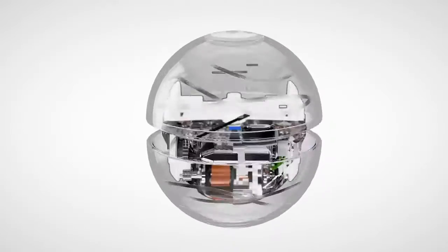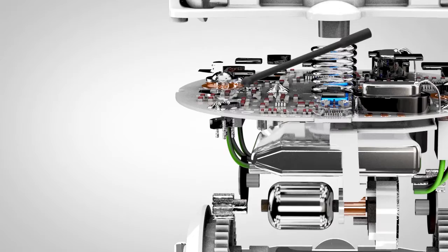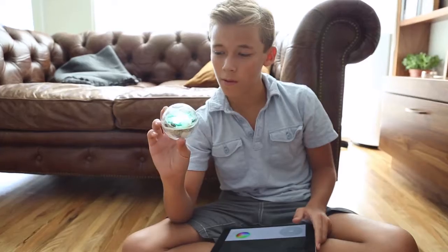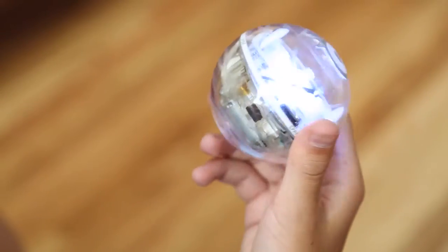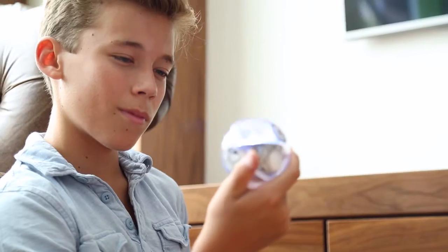The ball itself comes packed with all the same sensors and electronics as Sphero 2.0, but unlike Sphero 2.0's white shell, we've encased Spark Edition in clear polycarbonate, bringing you closer to the robotic action.